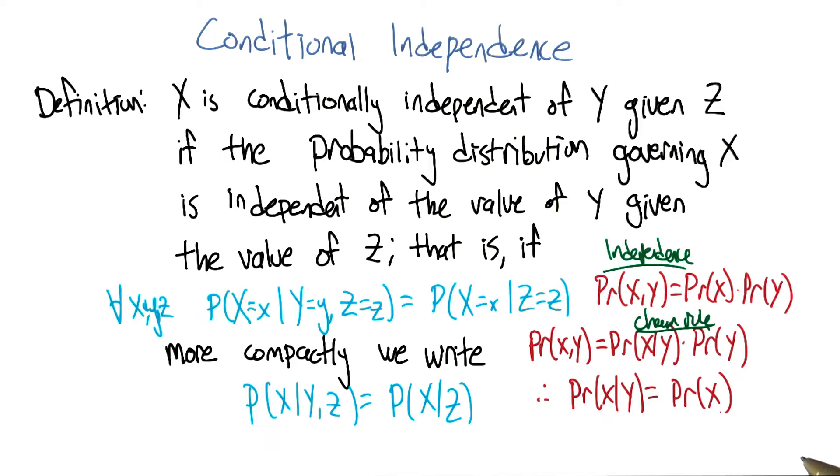Right, so since what independence means, right, is that the joint distribution between two variables is equal to the product of their marginals. And that's just, you know, comes from basic probability theory. And so if you think about what that means from the chain rule point of view, it's like saying the probability of X given Y is equal to the probability of X.